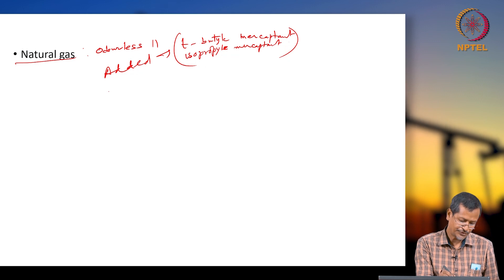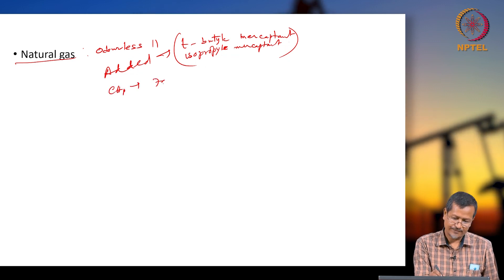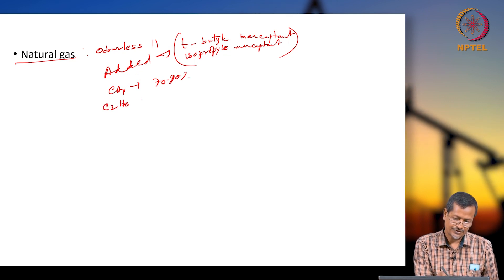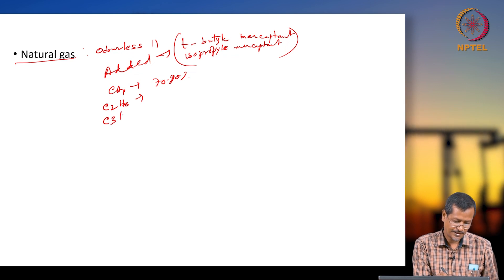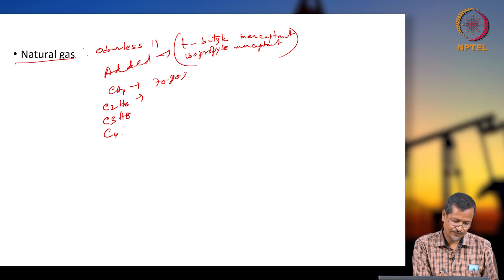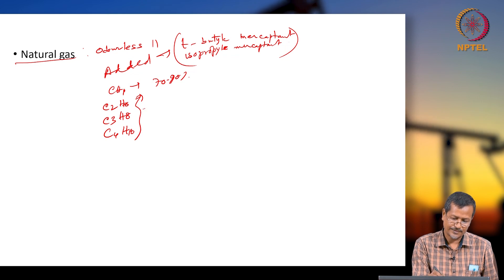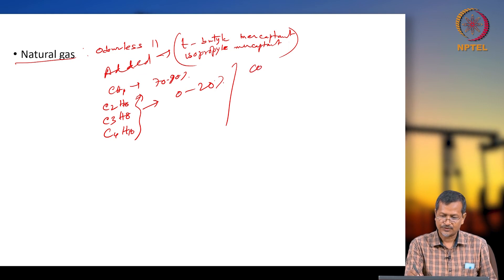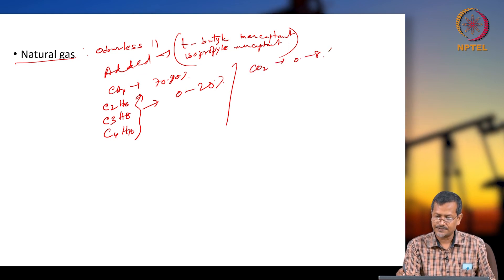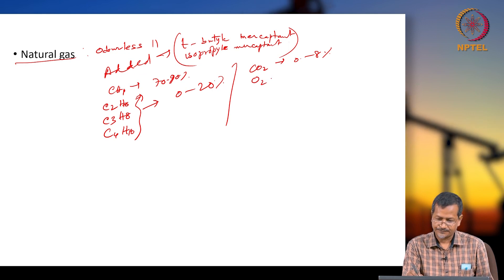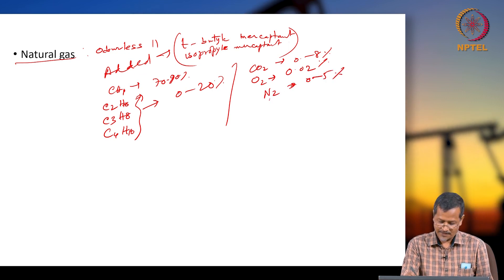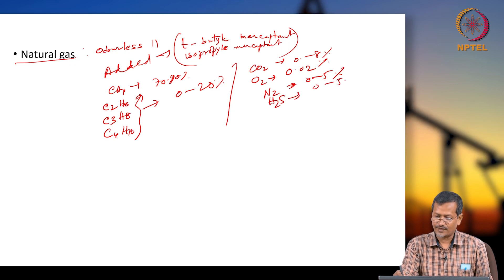Typically the composition of natural gas will be: CH4 at 70 to 90 percent; C2H6, C3H8, and C4H10 together about 0 to 20 percent. CO2 is also possible at 0 to 8 percent, O2 at 0.02 percent, nitrogen at 0 to 5 percent, and H2S can be there at 0 to 5 percent.